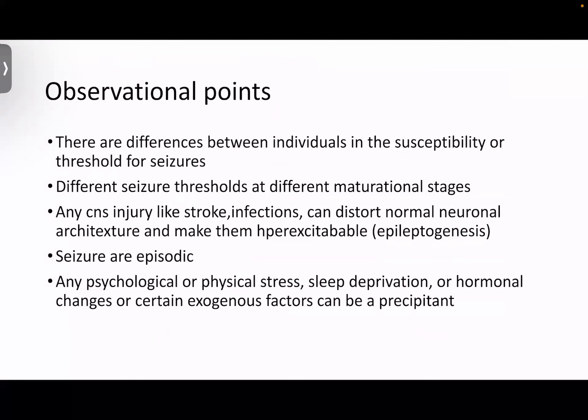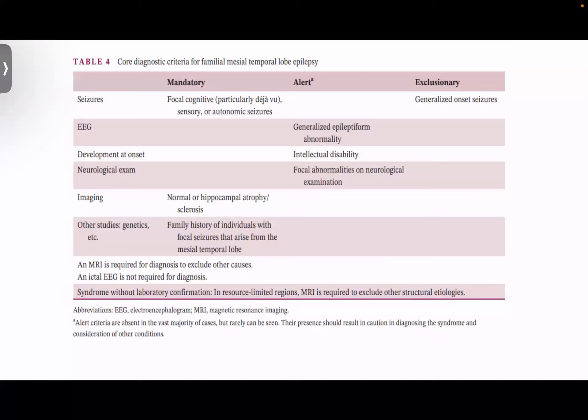When should you suspect a syndromic epilepsy? Key clues include: very early age of onset — for example, seizure onset between one to five years of age (though in that range, febrile seizures are the first differential); a family history of seizures; multiple types of seizures in the same patient — for example, GTCs at one time and atonic seizures at another; atypical EEG findings with multiple different patterns; and refractory epilepsy. Family history, early age of onset, multiple seizure types, and refractory epilepsy together should raise suspicion for a syndromic epilepsy.